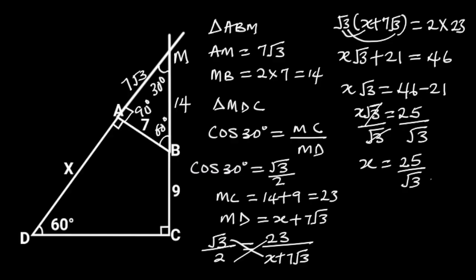Going further, we rationalize the denominator by multiplying the numerator and the denominator by root 3. And this will give us X is equal to 25 root 3 over 3.